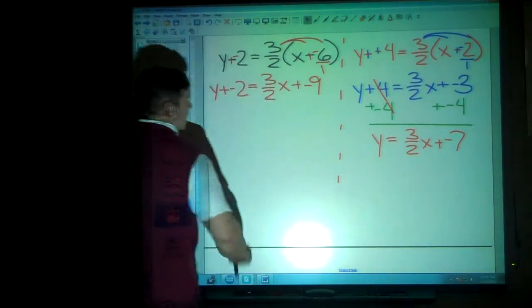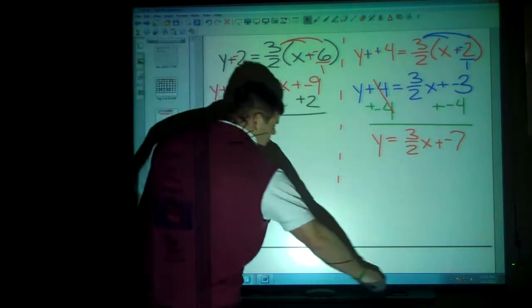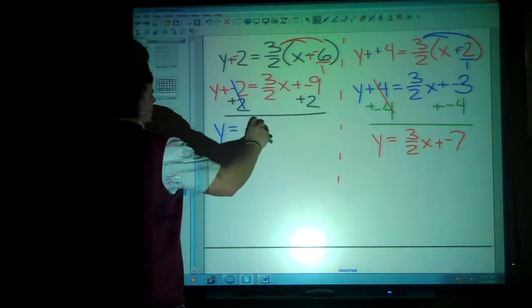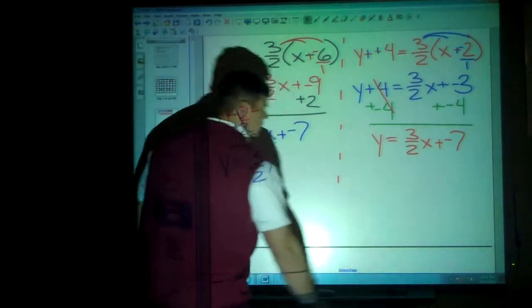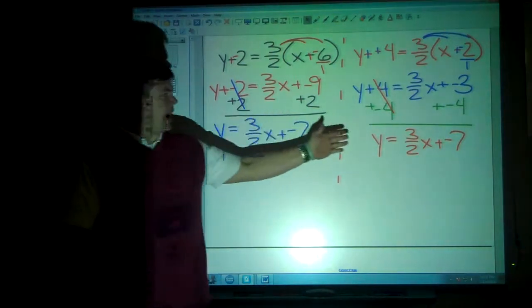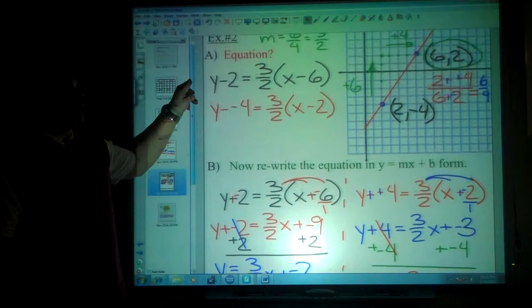Then, all you have to do is add 2 to both sides, and you will find that y equals 3 over 2x plus negative 7. In other words, the exact same equation. It will not matter which coordinate you choose.